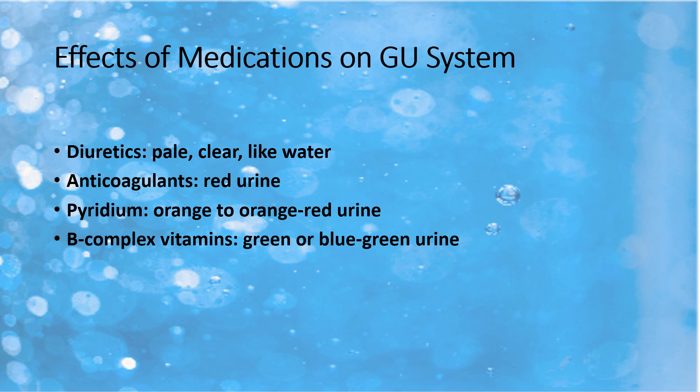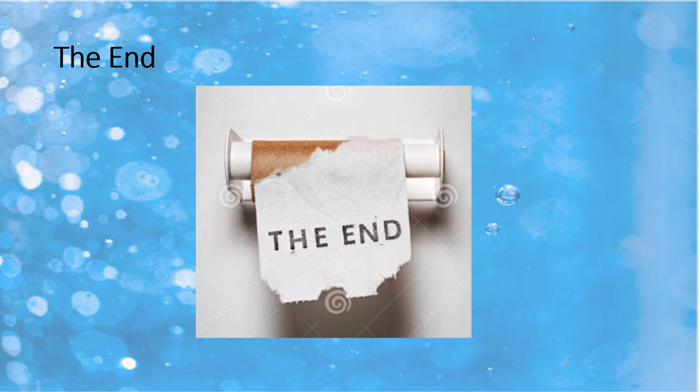Medications we give our patients have an effect on the way urine looks, and since we should be assessing urine color, here are some common block one medications and how they affect urine color. Diuretics — because they make people urinate a lot and quickly — will make the urine look very pale yellow, sometimes even completely clear like water. Anticoagulants, which are blood thinners, can turn the urine red from having red blood cells in it, and this is not a good color change. Pyridium, a medication discussed with UTIs, turns the urine bright orange to a reddish-orange — it looks like orange soda. B-complex vitamins can turn the urine green or blue-green. This is the end of part one of Introduction to the GU System.